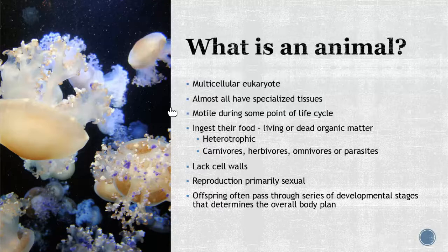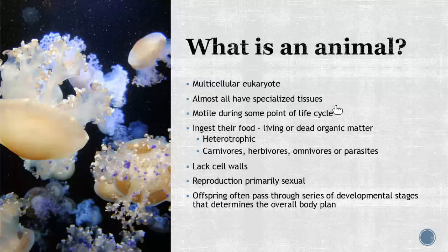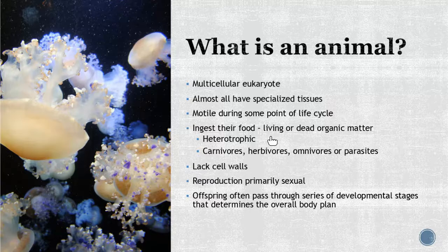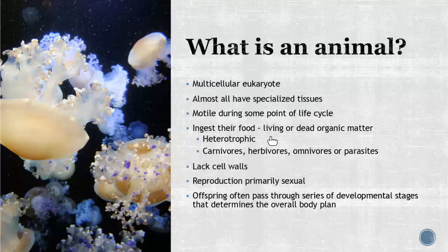Almost all animals are going to have specialized tissues, which I'll talk about in a bit. Some are sessile at certain points — a sea sponge, for example, you wouldn't think of as an animal, but it actually is and is pretty much sessile its entire life. These animals have to ingest their food from another source — living or dead organic matter. You'll see a wide diversity: carnivores, herbivores, omnivores, and parasites.